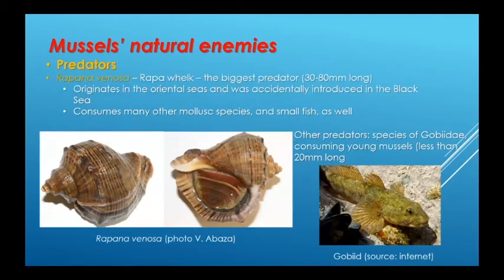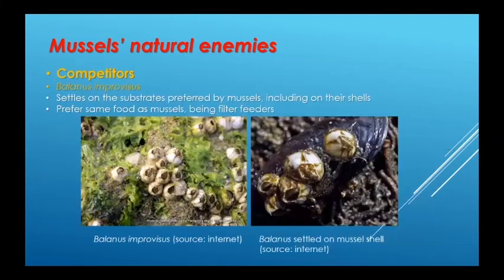The main predator of mussels is Rapana venosa, the largest predator, which originates in the oriental seas and was accidentally introduced in the Black Sea. It consumes many other mollusc species and small fish as well. Other predators are species of gobiids consuming young mussels. One of the most important competitors of mussels is Balanus improvisus, which settles on substrates preferred by mussels, including on their shells, and prefers the same food as mussels, being a filter feeder.